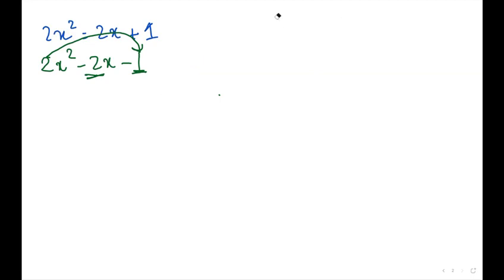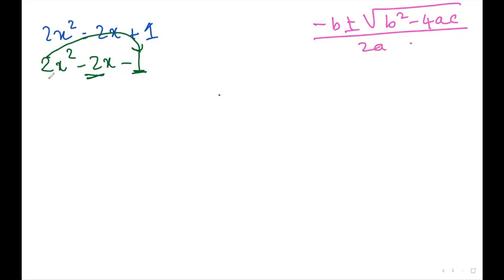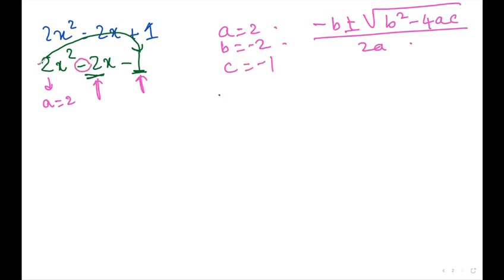So I will follow the quadratic formula here. In this equation, a is the coefficient of x squared, b is the coefficient of x, and c is the constant. You all have to check the signs carefully: I took positive because this is positive 2, negative because there is a negative sign, and c is equal to negative 1.